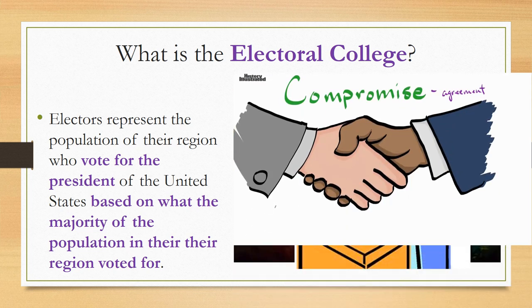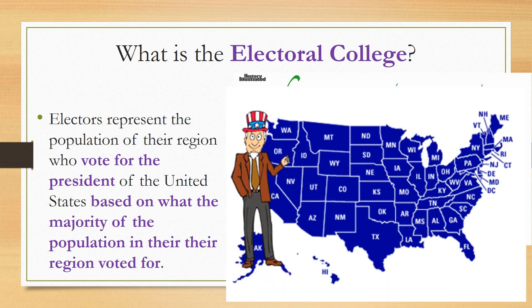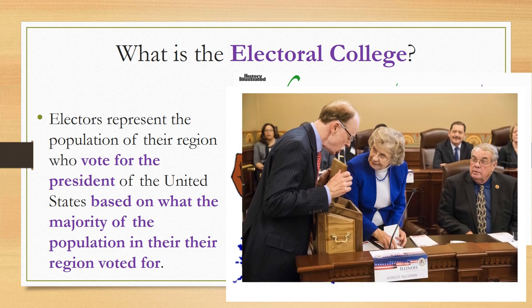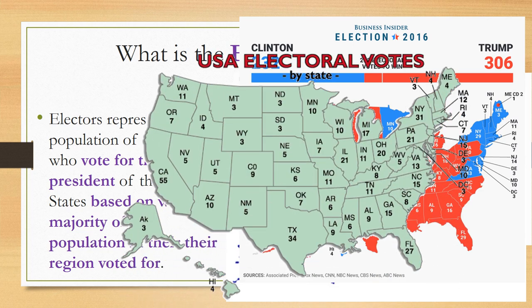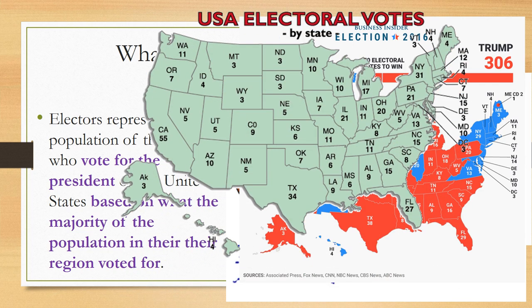Electors chosen by each state would elect the president. Ordinary citizens in each state would have a say this way, but the final decision would be made by people who were better informed about the candidates and the issues. The Constitution assigns each state a number of electors equal to the combined total of the state's Senate and House of Representatives delegations. At present, the number of electors per state ranges from 3 to 54, for a total of 538.